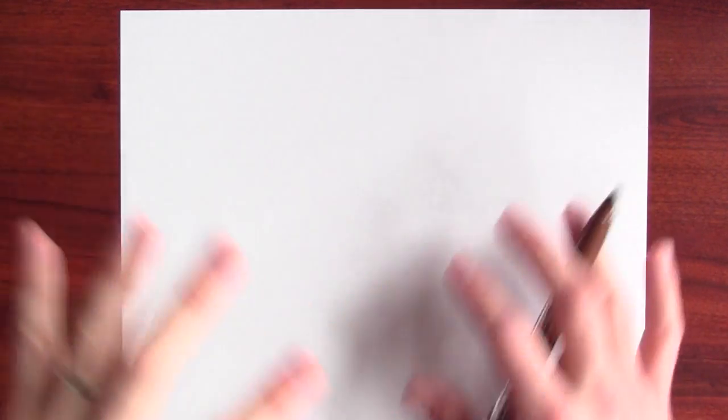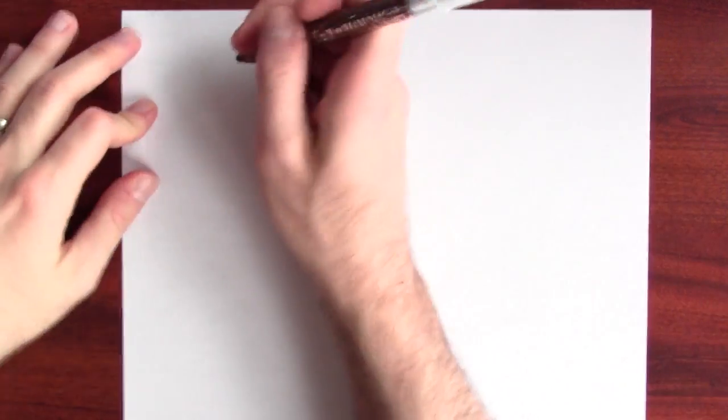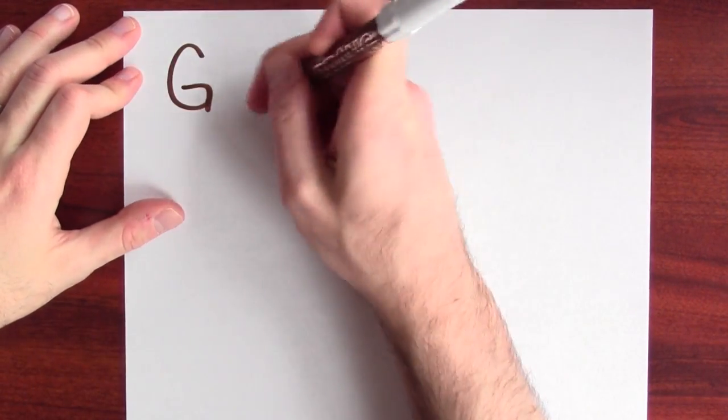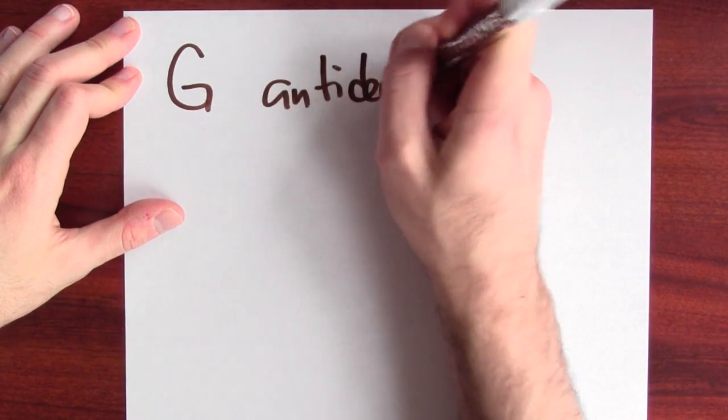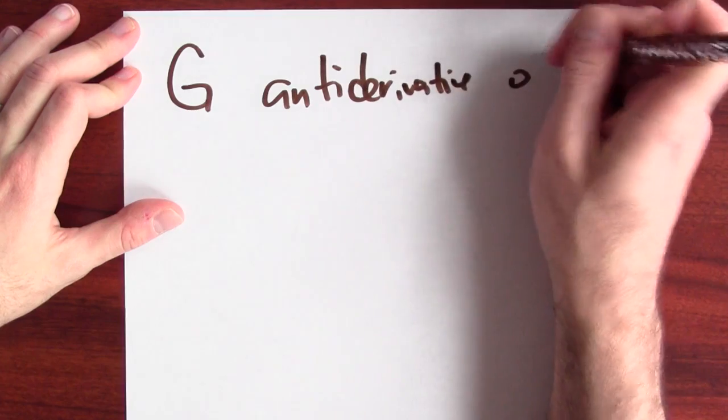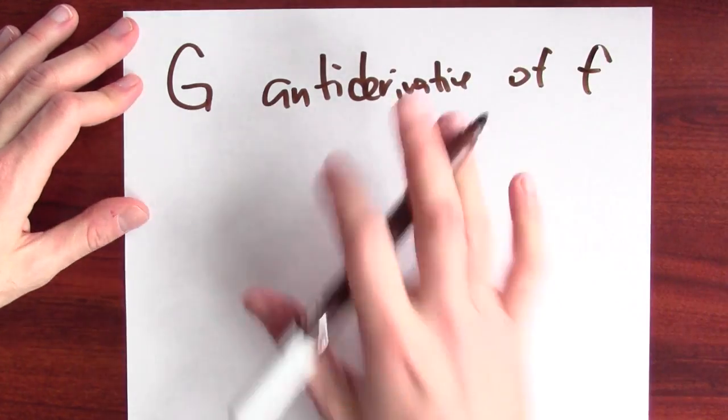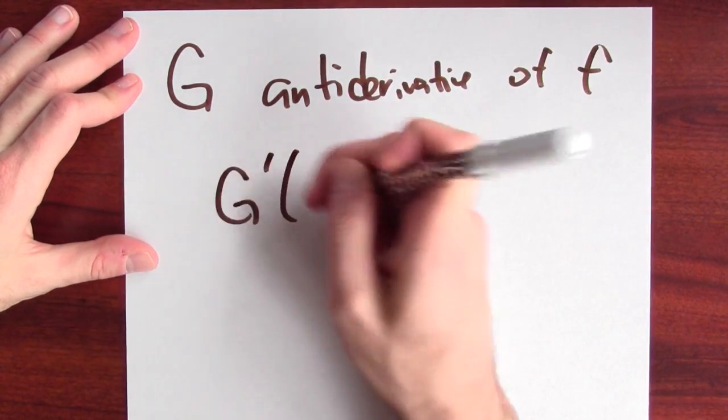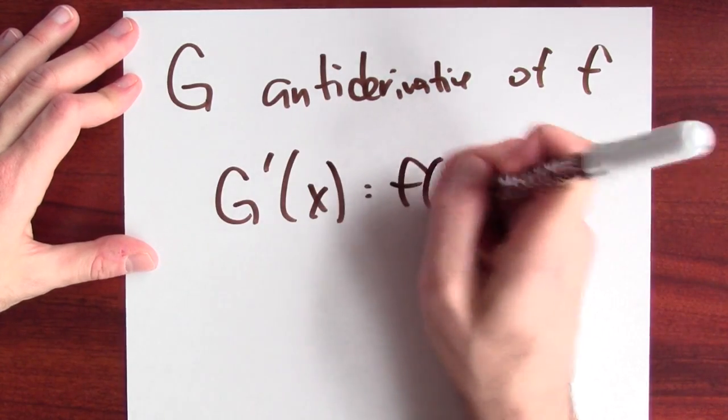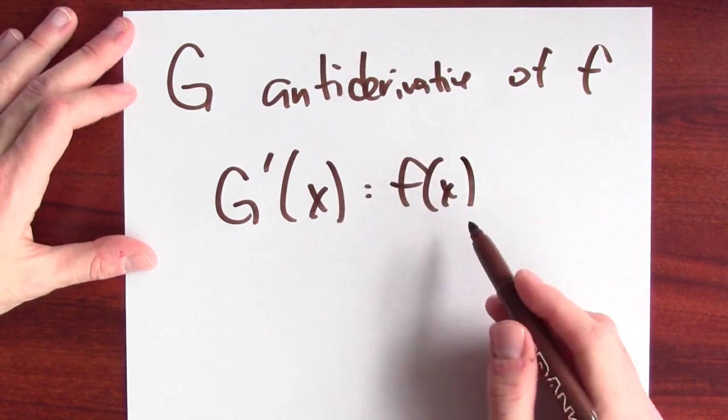So before we recover big F, let's try to walk there in steps. Let's first suppose that I've got some function big G, which is some anti-derivative of little f. So in other words, I mean that the derivative of big G is equal to little f.